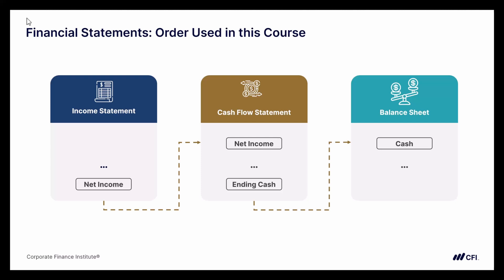By selecting this order, we have a nice flow from left to right. However, we've presented these statements in horizontal fashion just because they fit nicely onto the screen. When actually building a financial model, we would always recommend vertical model building — stacking them vertically with the income statement on top, followed by the cash flow statement, and the balance sheet on the bottom — giving a really nice top-to-bottom flow through these financial statements.